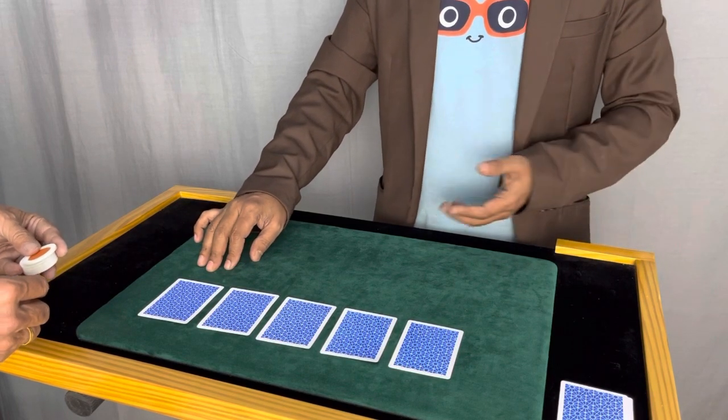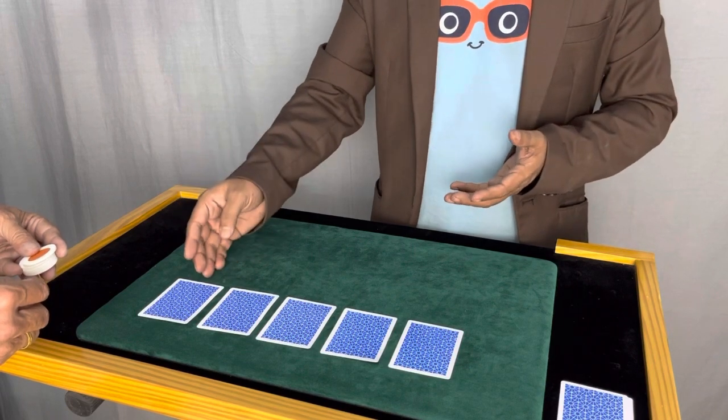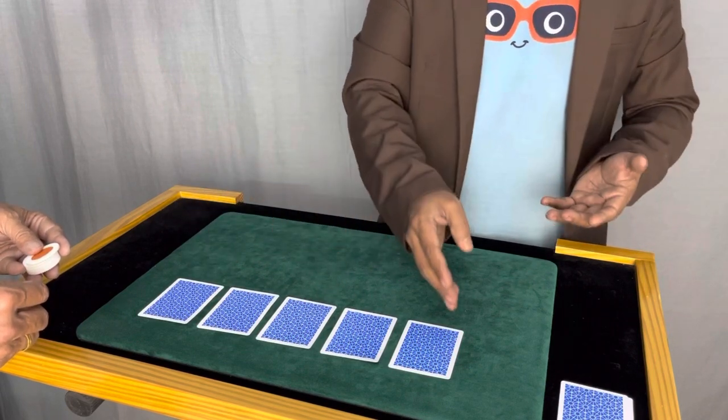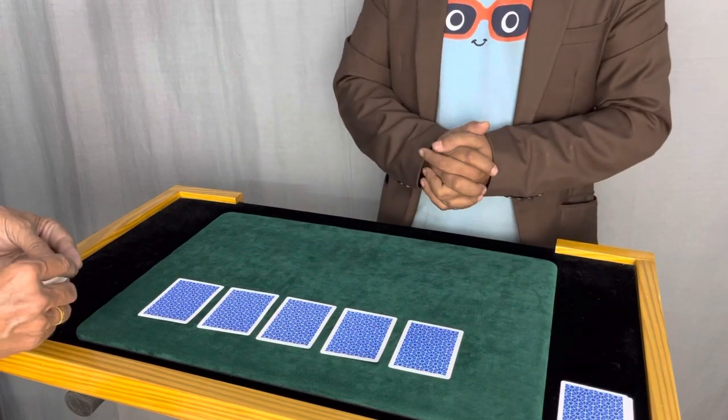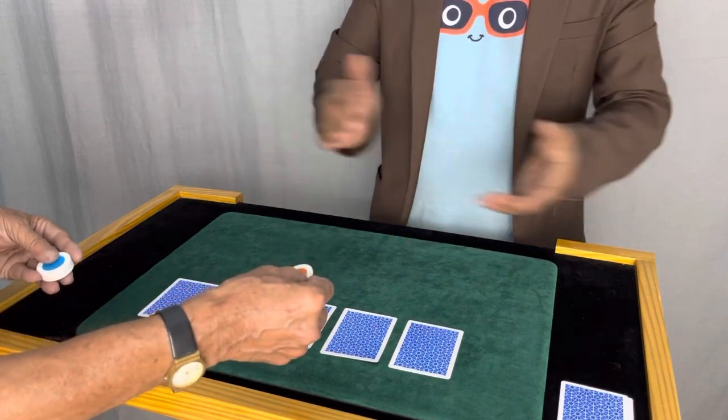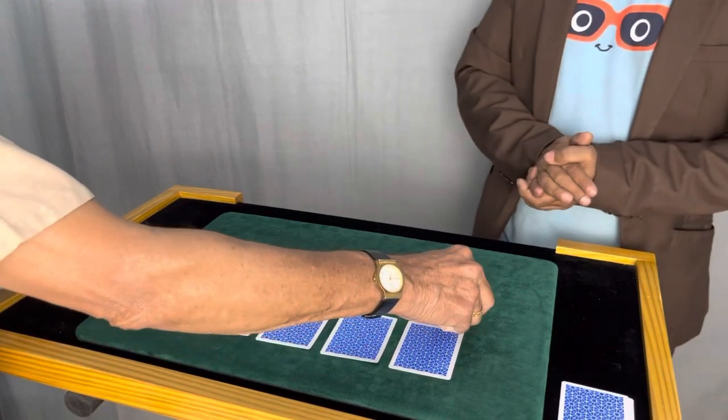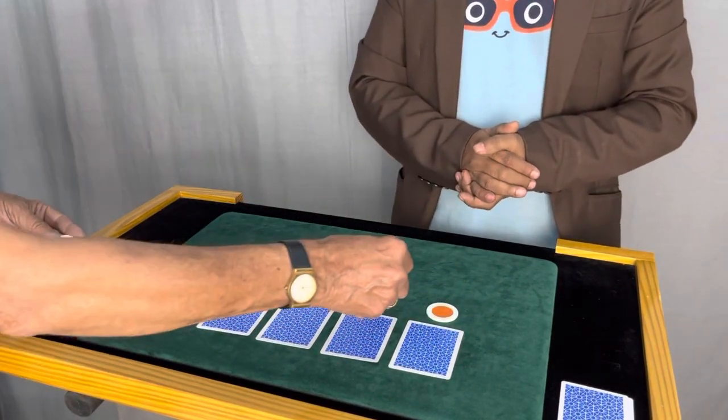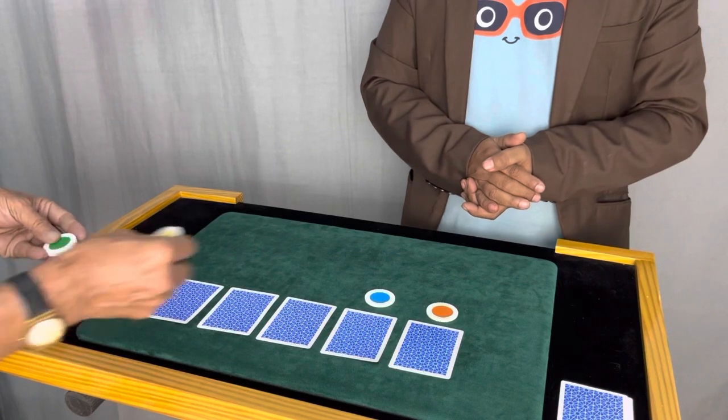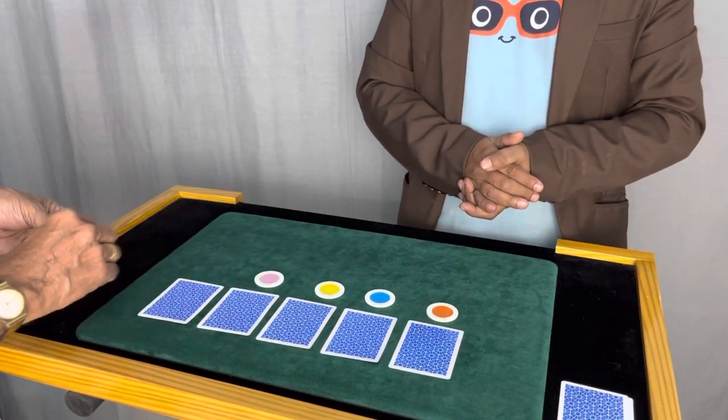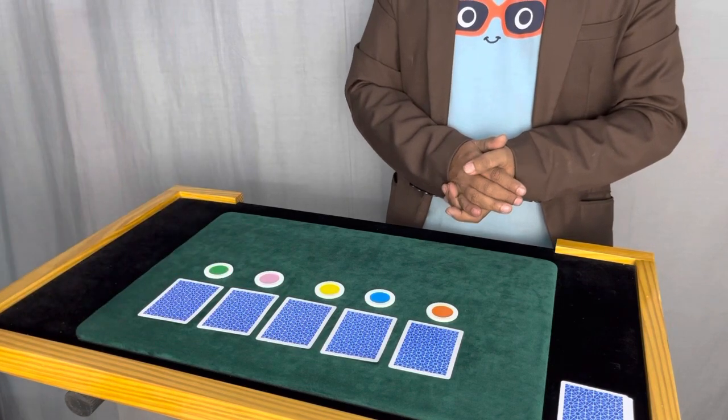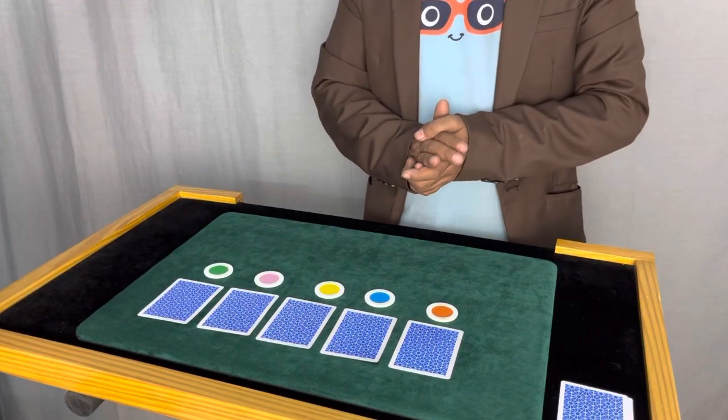But it depends on you - if you want, you can lie at certain points or you can tell the truth and put the matching color chip in front of the card, which is completely fine. Just go ahead and put one chip in front of each card. Okay, so these are placed.